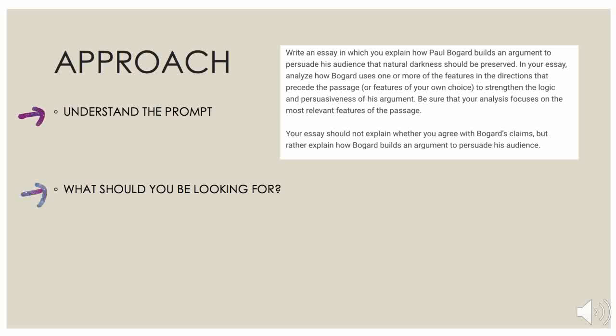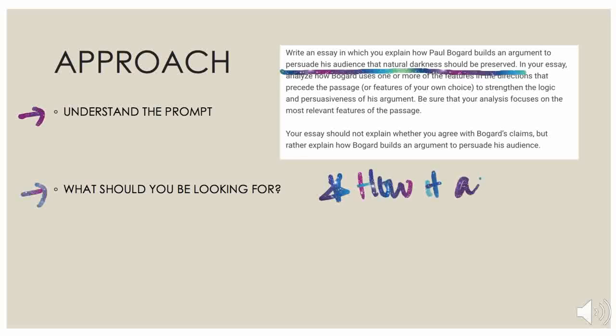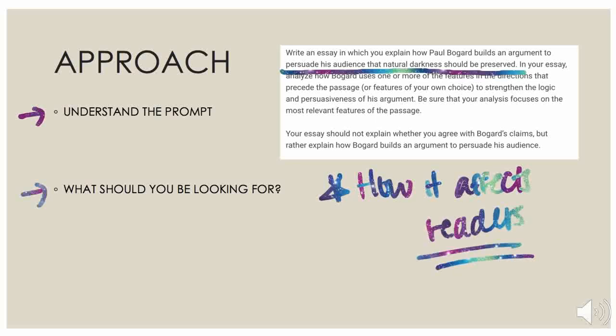So: 'Explain how Paul Bogard builds an argument to persuade his audience that natural darkness should be preserved.' So this is what he's doing — he's persuading the audience that natural darkness should be preserved. In your essay, analyze how Bogard uses evidence and all that stuff to back up his claim in order to persuade the audience. The main thing you need to be doing in these essays is showing how it affects readers. That is what you want to be looking for.